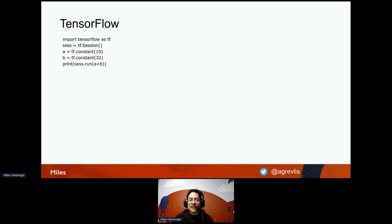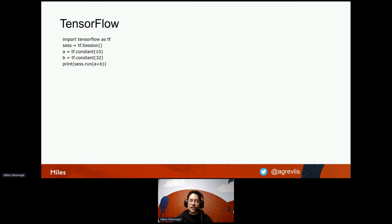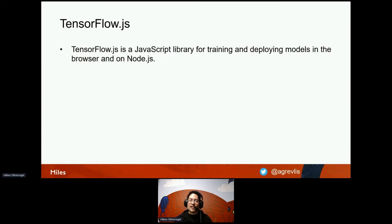TensorFlow comes in three different flavors: TensorFlow, which is a Python library; TensorFlow.js, which is for use in JavaScript; and TensorFlow Lite, which you can use on small embedded machines. If you use regular TensorFlow in, for example, a Python Jupyter notebook, you import TensorFlow as TF, start up a session, define some constants — for instance, A is 10 and B is 32 — then perform mathematical operations like printing A plus B to the console. TensorFlow.js is a JavaScript library that lets you both train and deploy models in the browser or in a Node.js application.